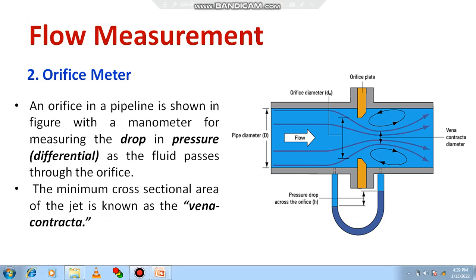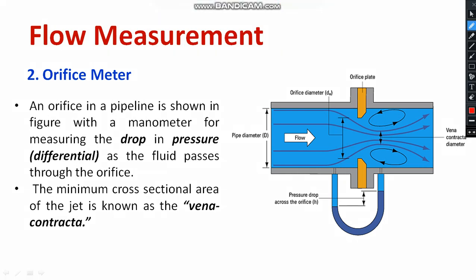The main purpose of orifice meter is it creates the pressure drop. You can see that it creates the pressure drop. By connecting the orifice meter, it creates the pressure drop. At the minimum, here you can see the minimum cross-sectional part.